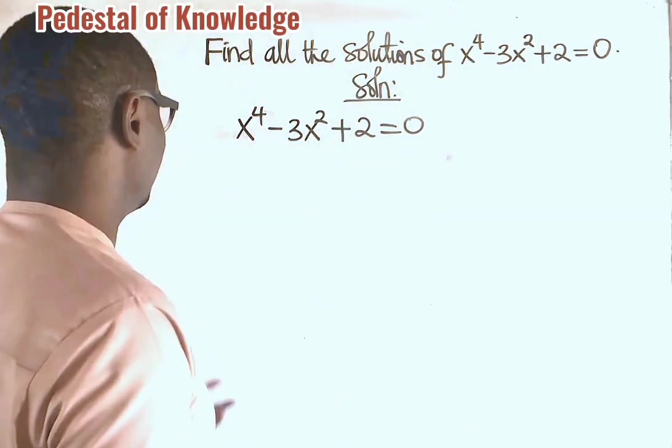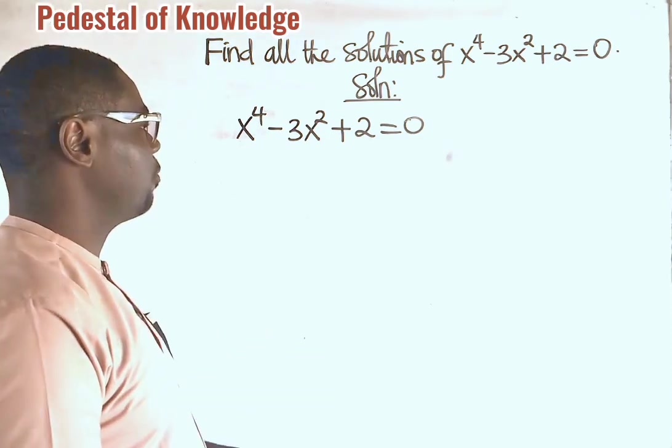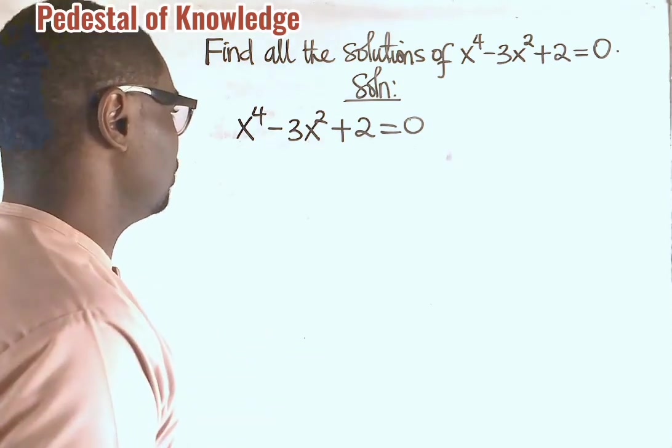Now, it says find all the solutions of x raised to the power of 4 minus 3x squared plus 2 is equal to 0.